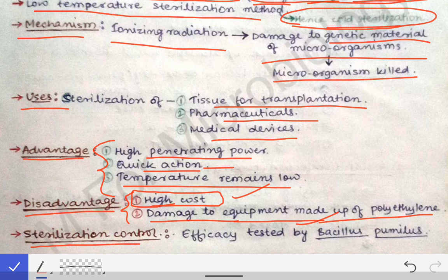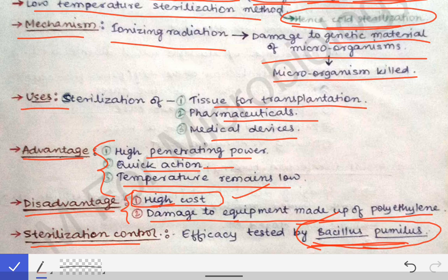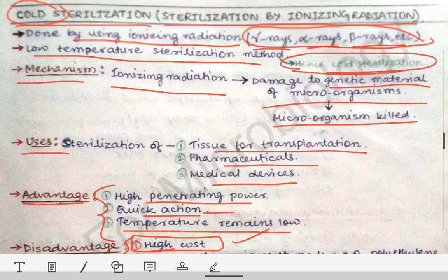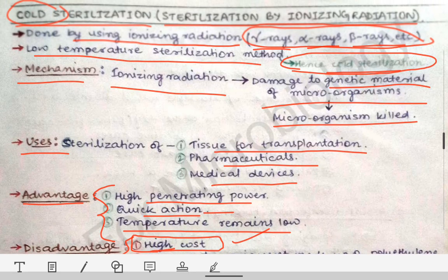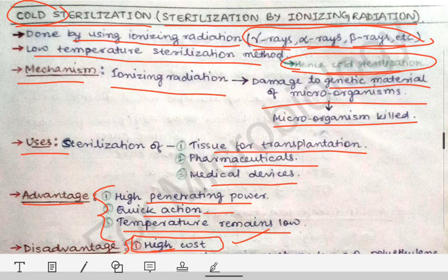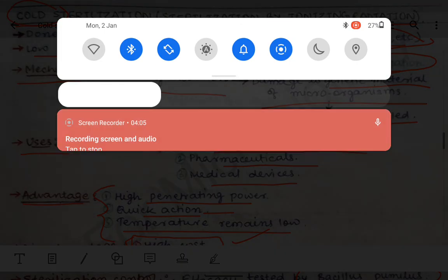For sterilization control in cold sterilization, the control used is the spore of the bacterium Bacillus pumilus. Bacillus pumilus is the organism used as the sterilization control in cold sterilization. These are all the important points about cold sterilization that you need to remember and write in exams.